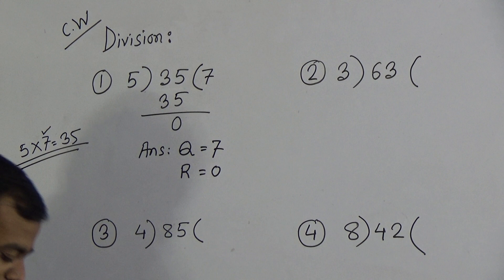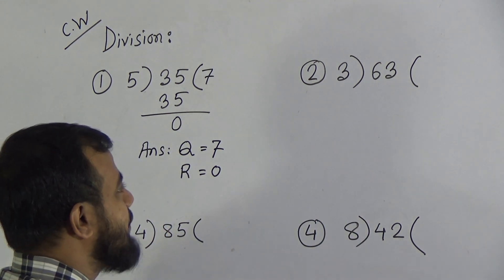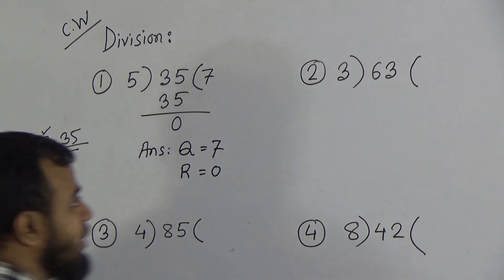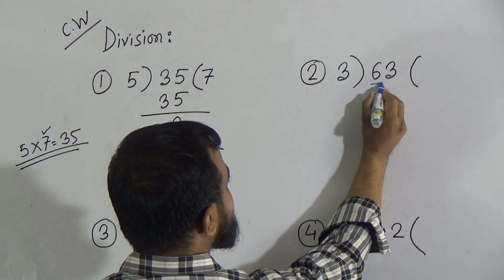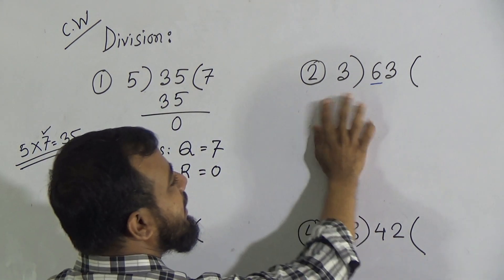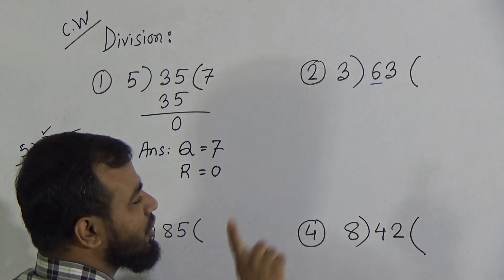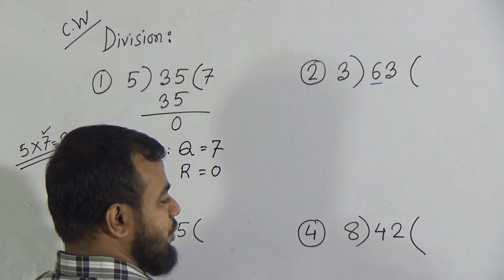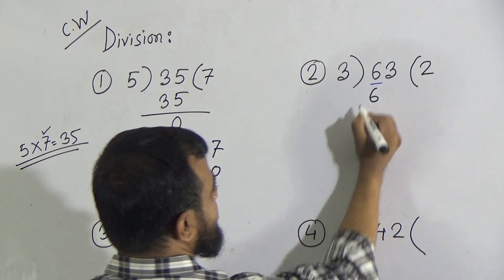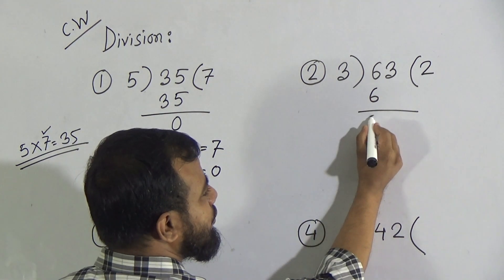Now let's solve question number 2. We need to divide 63 by 3. The rule is we take only one digit — so we take 6. Is 6 greater than 3? Yes, so we can divide directly. Count the times table of 3 to get 6: 3 ones are 3, 3 twos are 6. We got 6, so write down 3 twos are 6. Now subtract 6 from 6 to get 0.